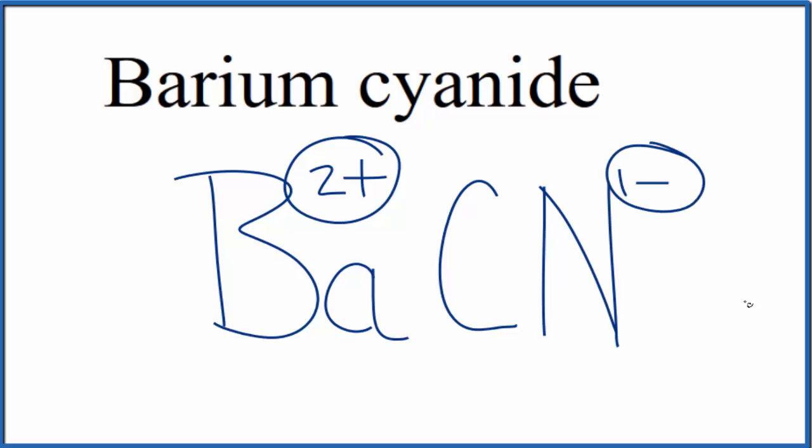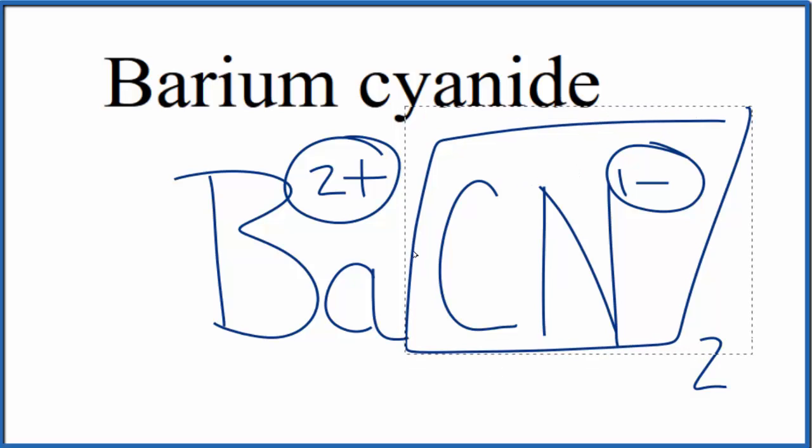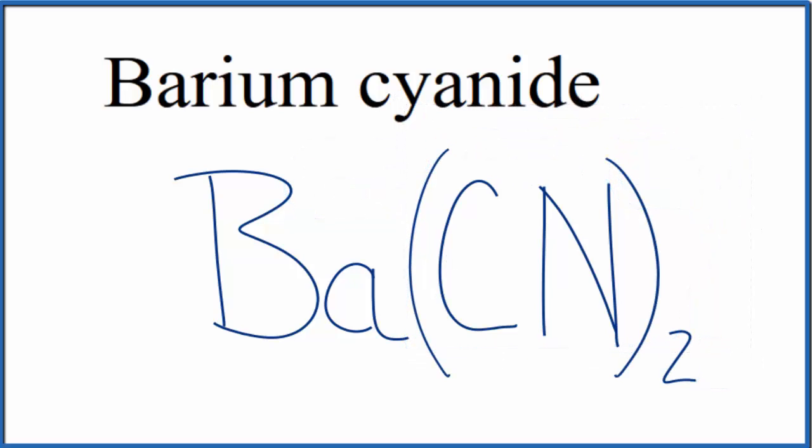If we had two of these cyanide ions here, 2 times 1 minus, that would give us 2 minus. That would balance out the 2 plus. So let's replace this box with parentheses. And this is the formula for barium cyanide: Ba(CN)2. The 2 means we have two of these cyanide ions.